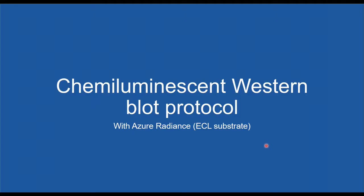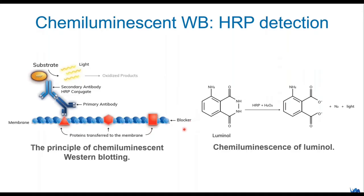The reason fluorescence is better for quantitation boils down to the nature of the signal itself. Chemiluminescence is kinetic and dynamic in nature. Fluorescence has spectral separation and is only affected by the power of the excitation light and the amount of antibody — so it's much more reliable than chemiluminescence. But chemiluminescence has higher sensitivity than fluorescence. Let us now move to a detailed walkthrough of the chemiluminescence Western blot protocol. I'll be using an ECL substrate called Azuradiance, one of our ECL substrate products.